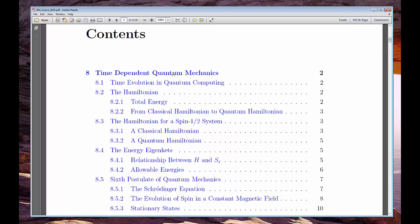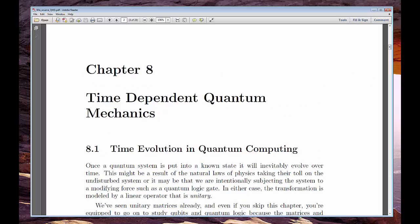Today, we consider what happens to a quantum system, for us a qubit, when it's allowed to evolve over time. We'll add a few more words to our vocabulary, terms like Hamiltonian, energy eigencats, and the famous Schrodinger equation.